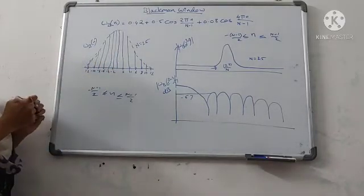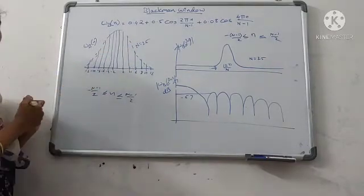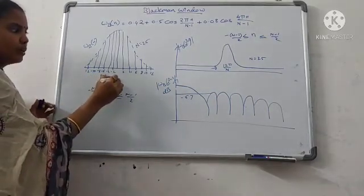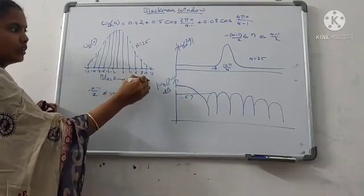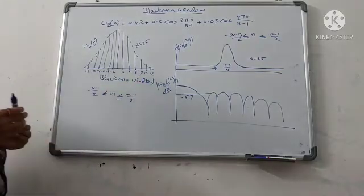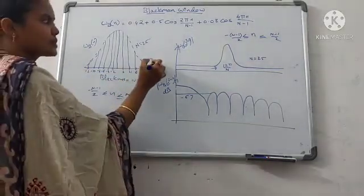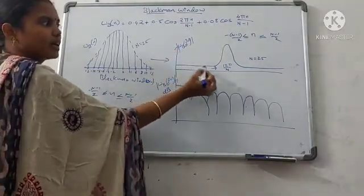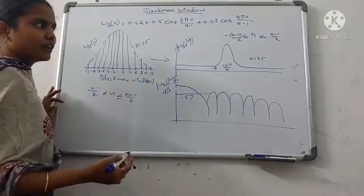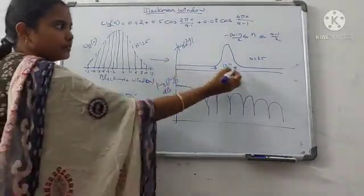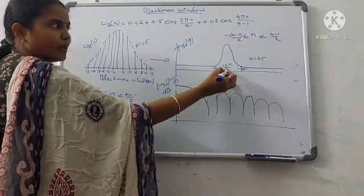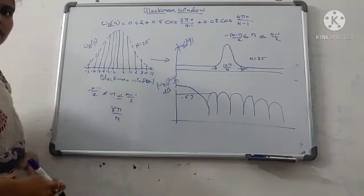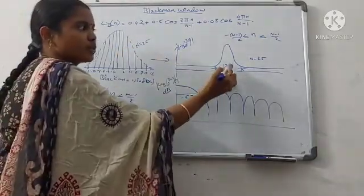After the Fourier transform of W_B of n, you get mod of W_B(e^jω). This is the normalized frequency response of the Blackman window. The main lobe width is increased to 12π/N. For the Hamming window it was 8π/N, so the main lobe width is wider for the Blackman window.